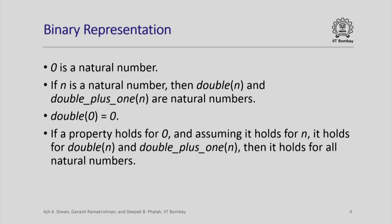This property must hold. And similarly, as in the case of the Peano axioms, if we know that a property holds for 0, and assuming it holds for n we can show it holds for double(n) and double_plus_1(n), then it holds for all natural numbers. So to prove any property for all natural numbers we need to show it holds for 0, and assuming it holds for n, it should hold for double(n) and also for double_plus_1(n). We have two operations and must show that applying either one preserves the property.